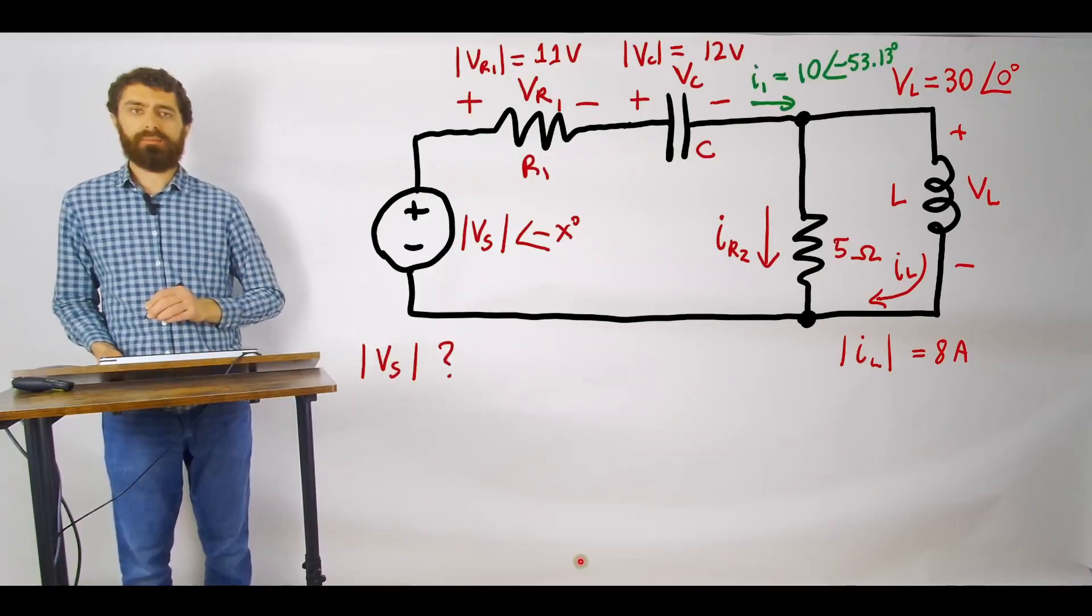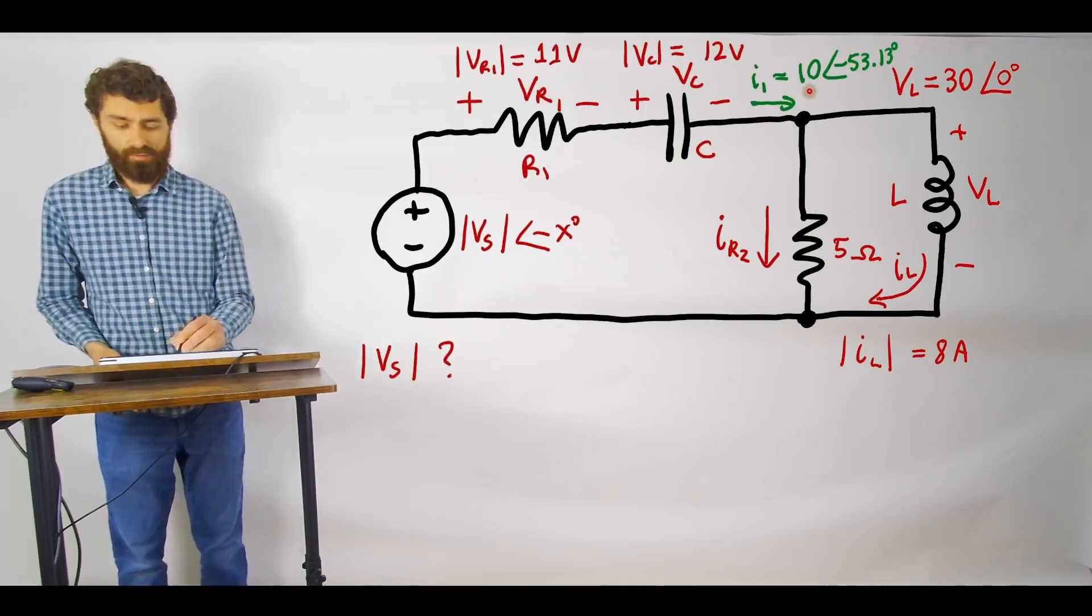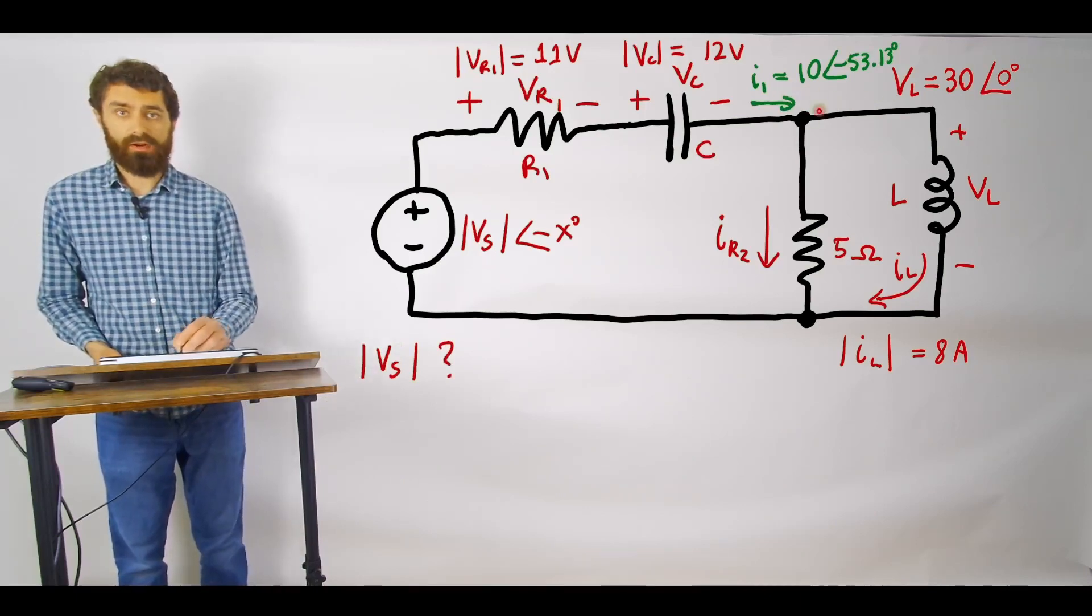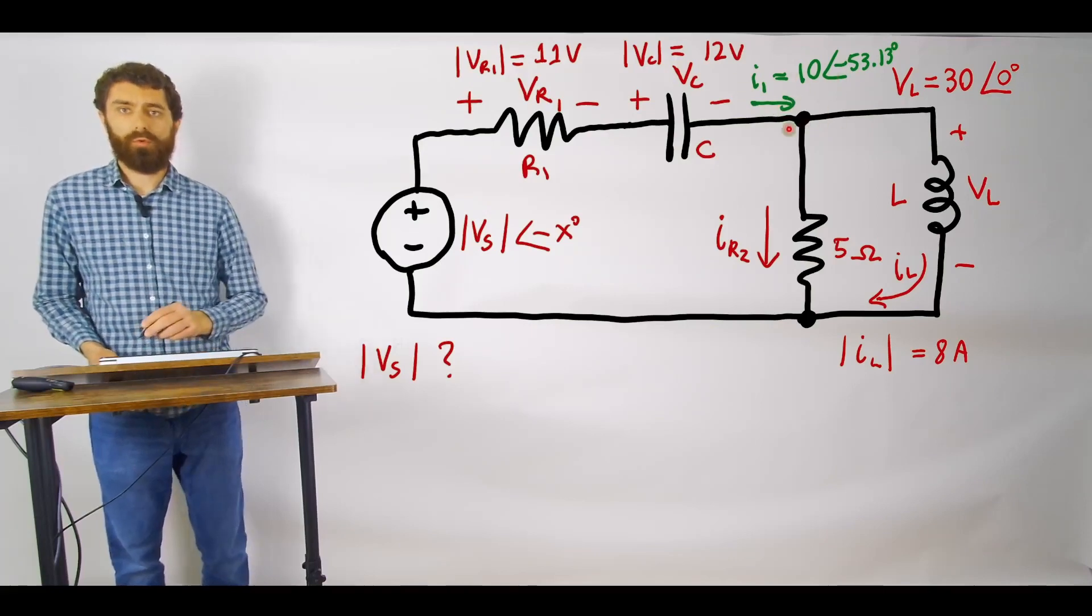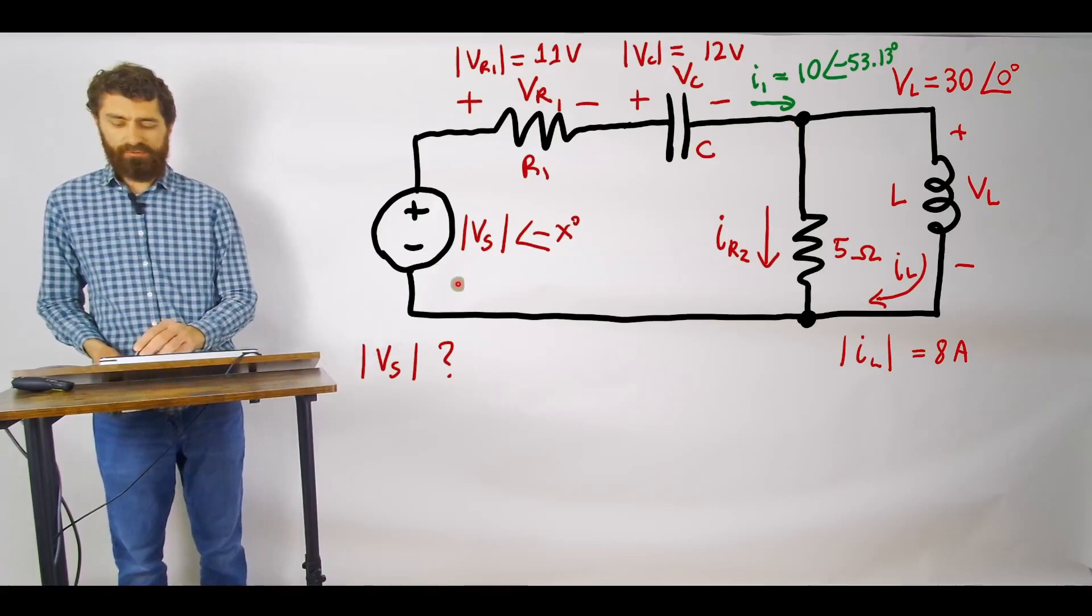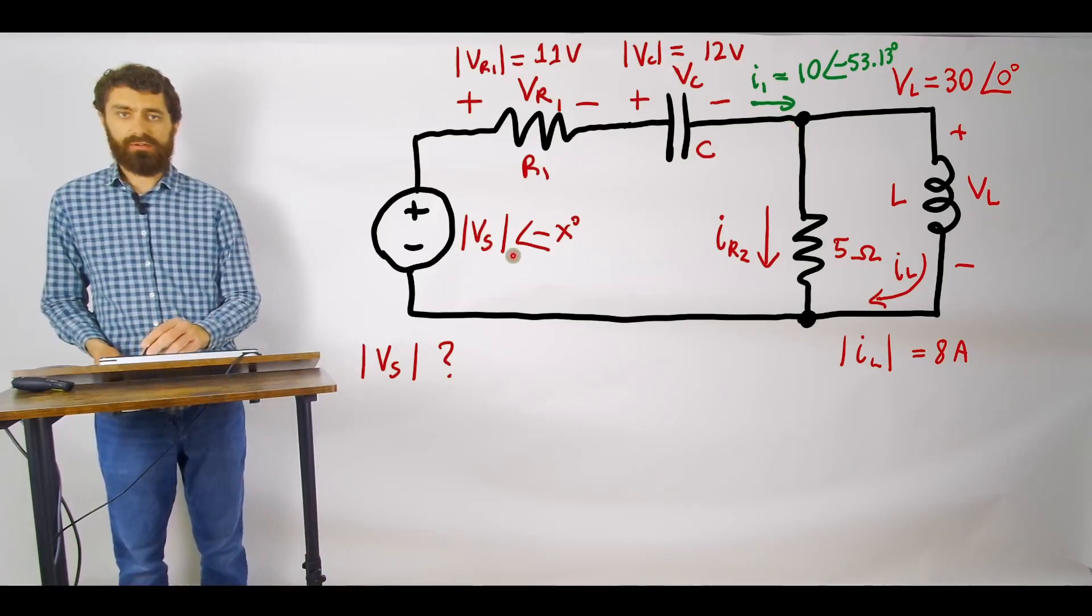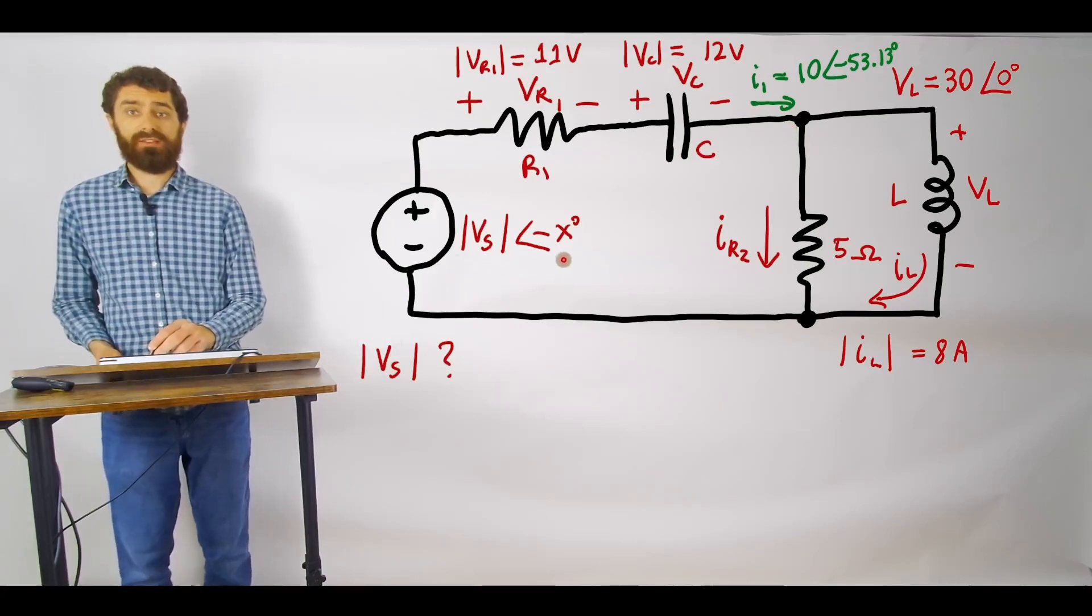So then the next step is to find what Vs is. We've already solved for I1 here so I've included to put that in green to show that it's something we've solved for and now what we want to do is we want to find this magnitude and then eventually we'll find this phase as well.